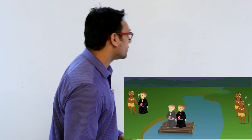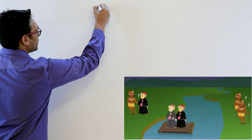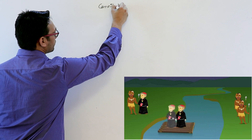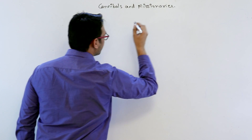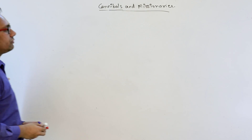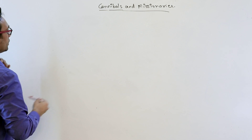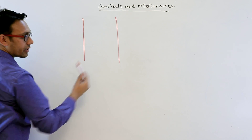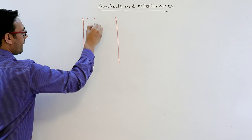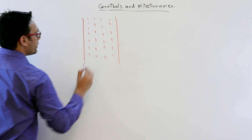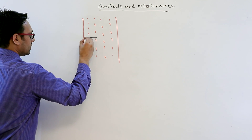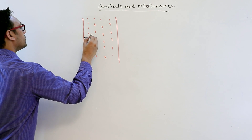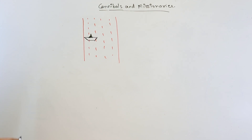In this video, let us see what is the Cannibals and Missionaries problem. You can view this problem like this: there is a river here, and there is a boat on the river. This is representing the riverbank.